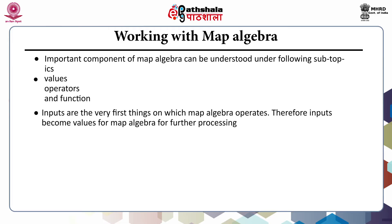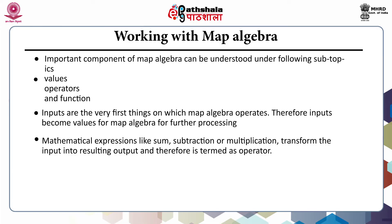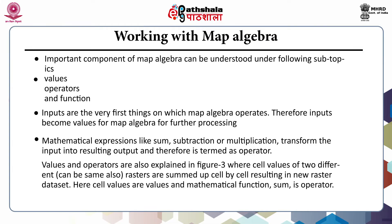Inputs are the very first things on which map algebra operates; therefore inputs become values for map algebra for further processing. Mathematical expressions such as sum, subtraction or multiplication transform the input into the resulting output and are therefore termed operators. The values and operators are explained in figure 3, where cell values of two different rasters are summed up cell by cell resulting in a new raster data set. Here the cell values are the values and the mathematical function — sum — is the operator.